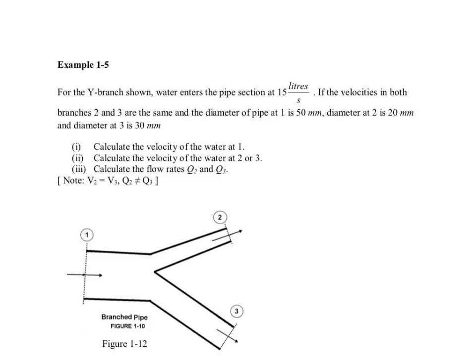Let's look at example 1-5. We are told that at the Y branch, water enters at 15 liters per second, and it divides into two streams, stream 2 and stream 3.